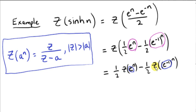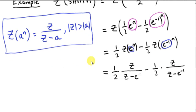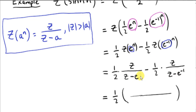We are applying the linearity property to take the Z-operator into this expression. So we get one half Z{e to the n} minus one half Z{e to the minus 1 to the n}. We plug e in for a, and then e to the minus 1 in for a. To get a common denominator, we multiply these two denominators together, taking out the half. So we have Z times Z, which is Z squared.